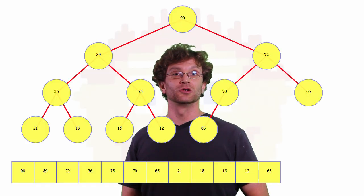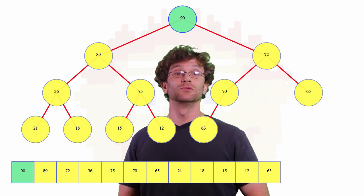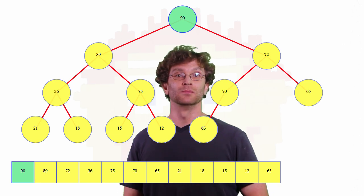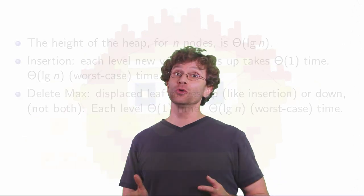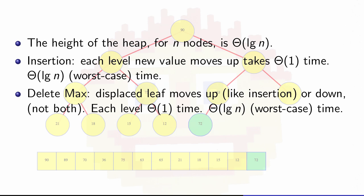Finally, let's talk about efficiency. Finding the max value, very easy, constant time. To do insertion, assuming that we have enough room at the end of our array to just put a value there in constant time, well, for each level of the tree we might have to do one comparison and one swap, up to the height of the tree, that's logarithmic, logarithmic time.